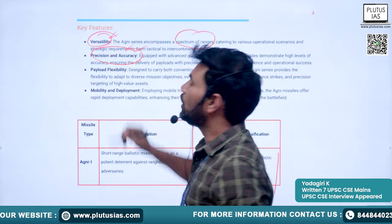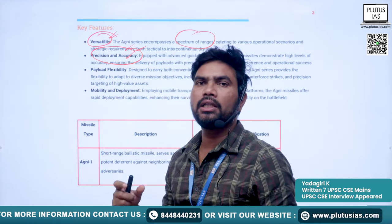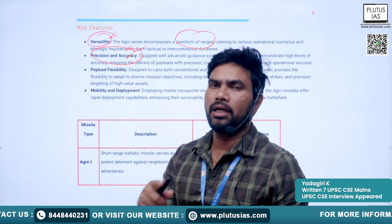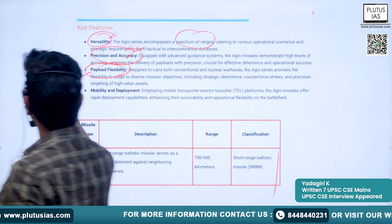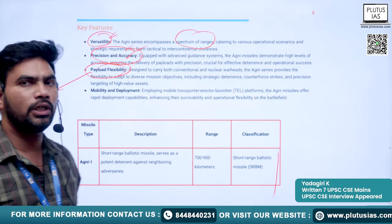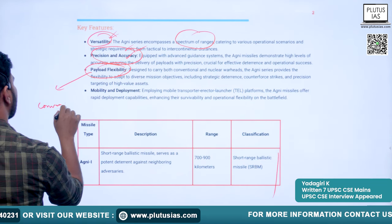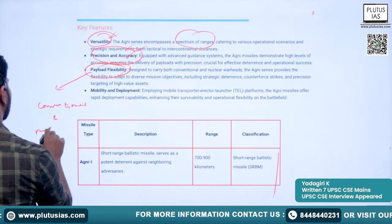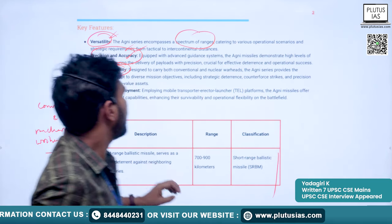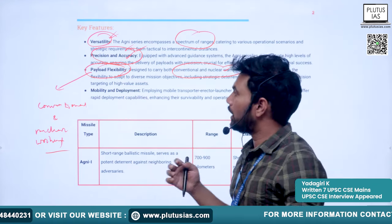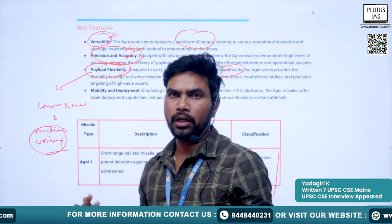Agni missiles offer precision and accuracy — they can hit targets with minimal error. They also have payload flexibility: Agni missiles can carry both conventional and nuclear warheads. Nuclear warheads include atom bombs or hydrogen bombs, while conventional payloads use different types of explosive material.